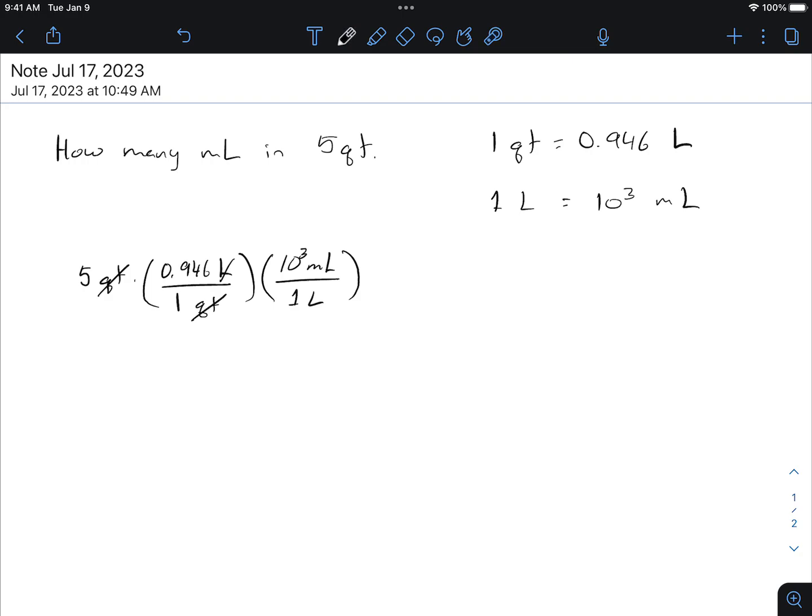So one more time, the liter cancels out, and I am left with 5 times 0.946 times 10 to the 3,